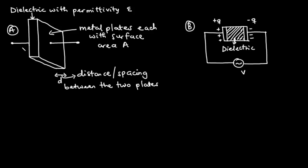As you can see in the first diagram, a capacitor is made up of two metallic plates — this is the first one and that is the second one. These two metallic plates are separated by an insulator or a dielectric material, and the spacing between the two metallic plates is referred to as D.